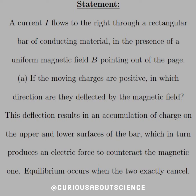This one reads: a current I flows to the right through a rectangular bar of conducting material in the presence of a uniform magnetic field B pointing out of the page. Part A: if the moving charges are positive, in which direction are they deflected by the magnetic field? This deflection results in an accumulation of charge on the upper and lower surfaces of the bar, which in turn proceeds to produce an electric force to counteract the magnetic one. Equilibrium occurs when the two exactly cancel.